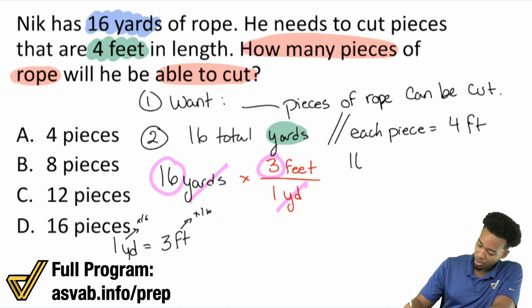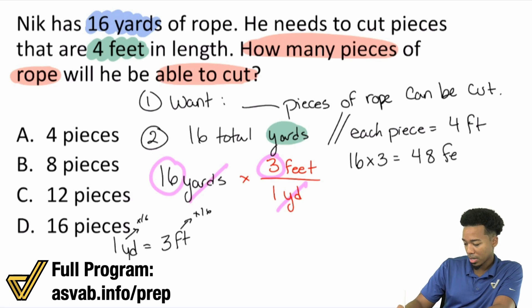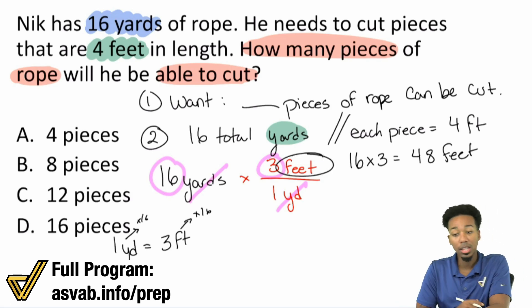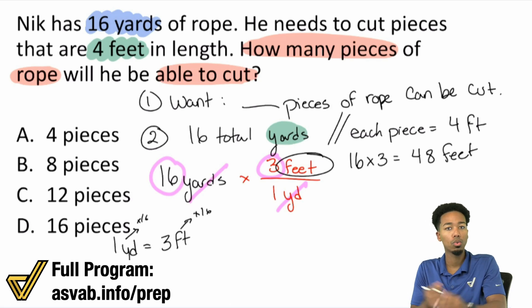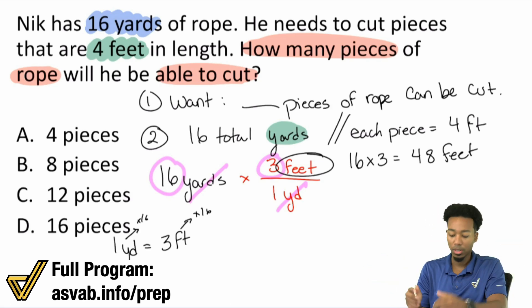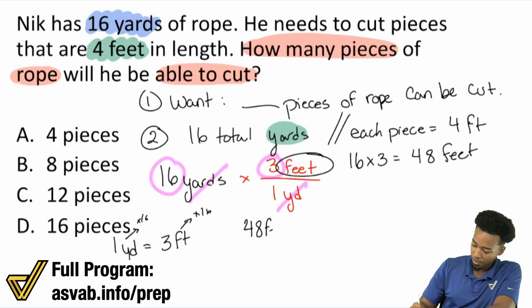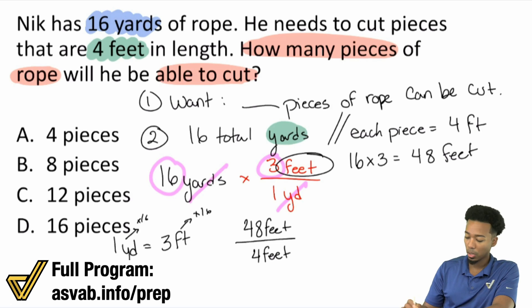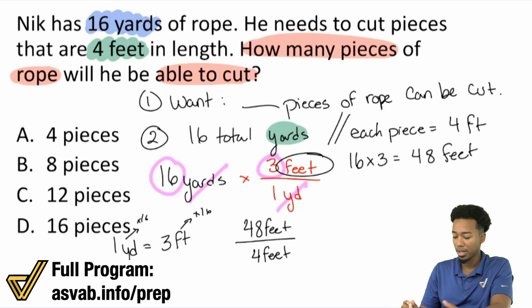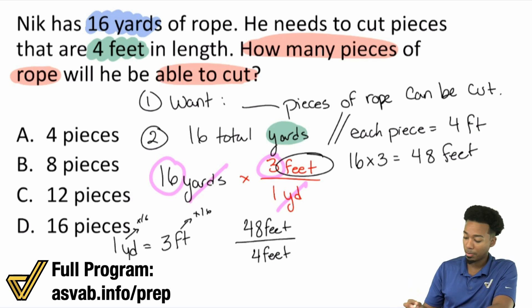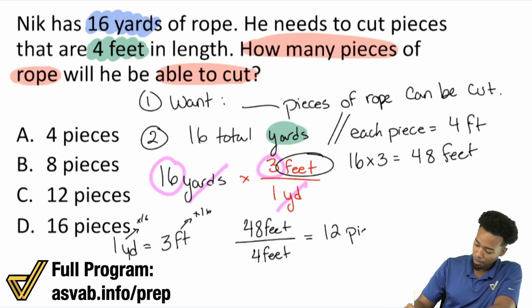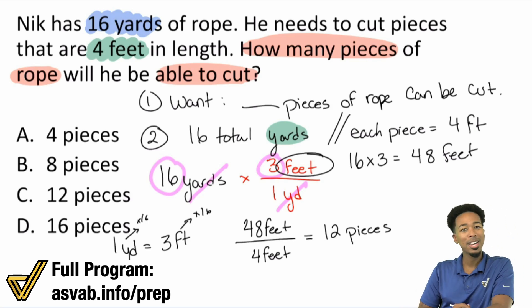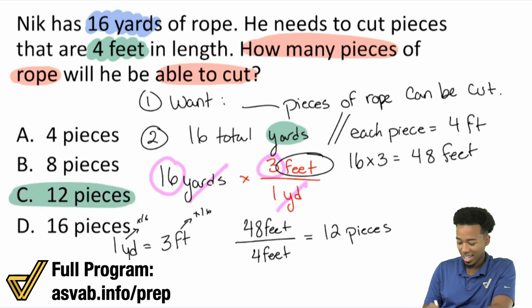So we'll have 16 times 3, which is 48. That's 48 feet. Now that we have the total rope in feet, we can divide. So we have 48 feet divided by 4 feet per piece of rope. The word 'each' really gives it away — each piece is 4 feet, so you divide to find how many pieces. That gives you 12 pieces. So the answer here will be C.